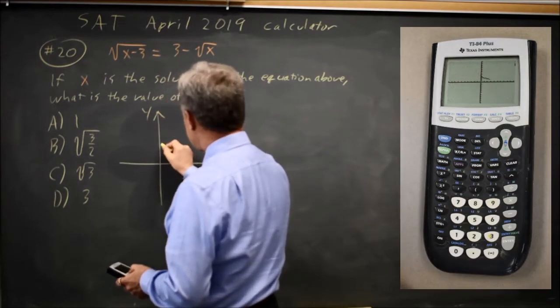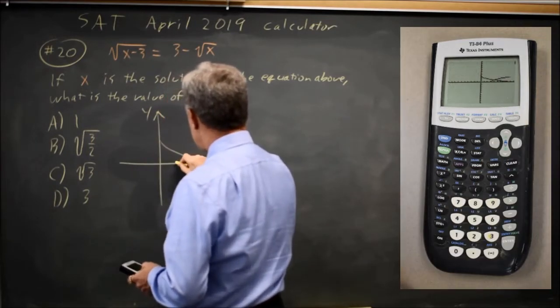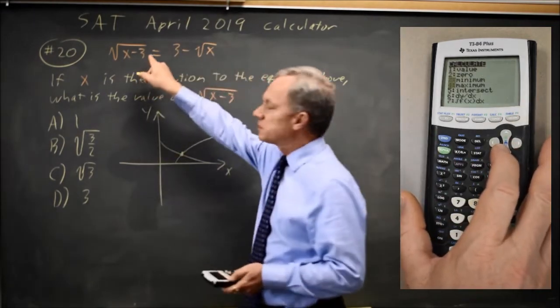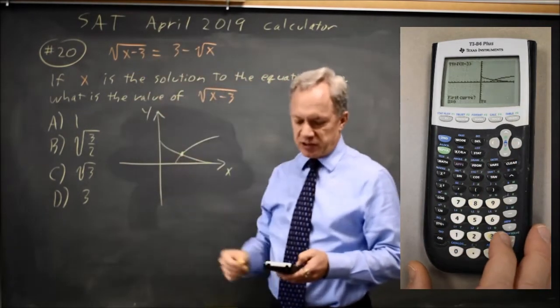And the graph looks something like this and then this, and the solution to this equation will be the x value of the point of intersection.